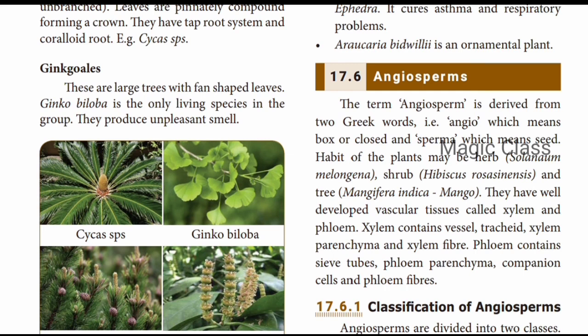Angiosperm is a Greek word - 'angio' meaning box or closed, and 'sperma' meaning seed. The habit of the plant may be herb, shrub, or tree. Examples: herb - Solanum melongena; shrub - Hibiscus rosa-sinensis; tree - Mangifera indica (mango). They have well-developed vascular tissues - xylem and phloem. Xylem contains vessels, tracheids, xylem parenchyma and xylem fibers; phloem consists of sieve tubes, phloem parenchyma, companion cells and phloem fibers.